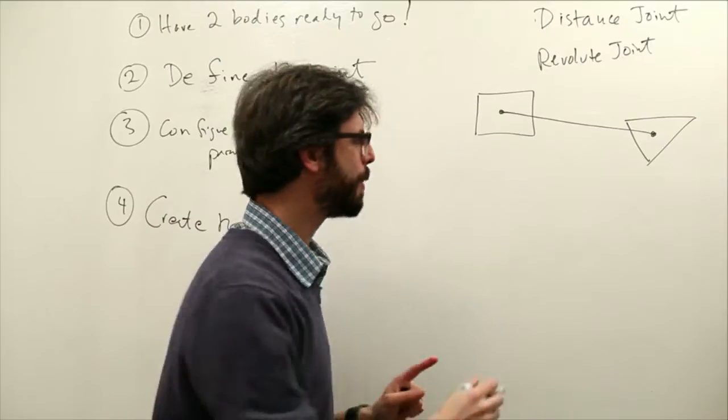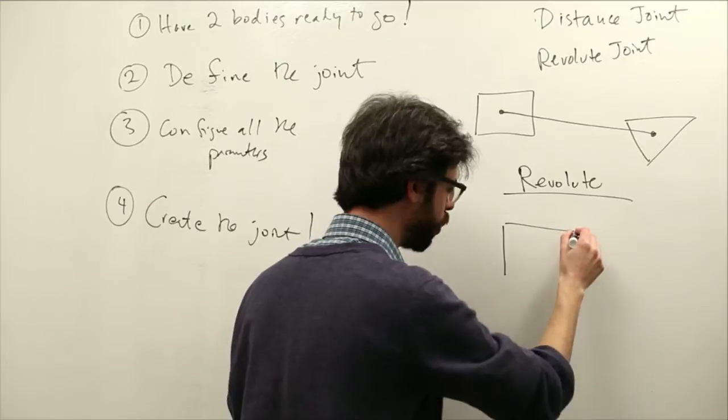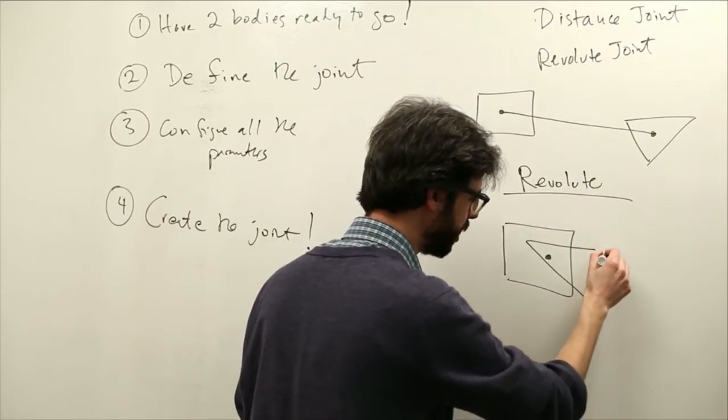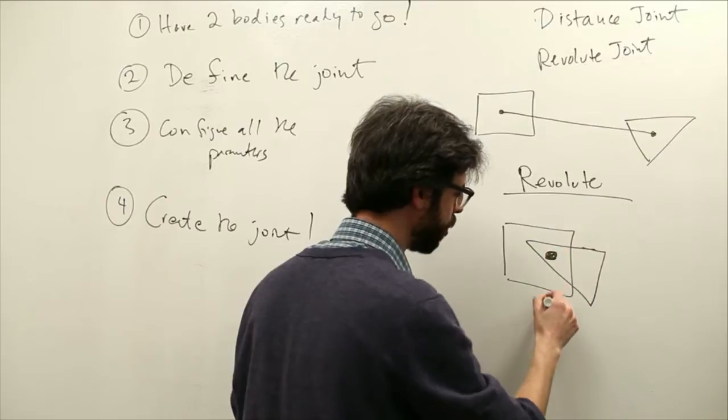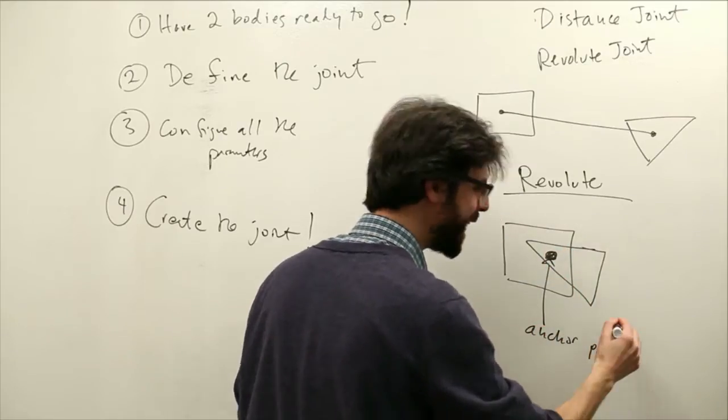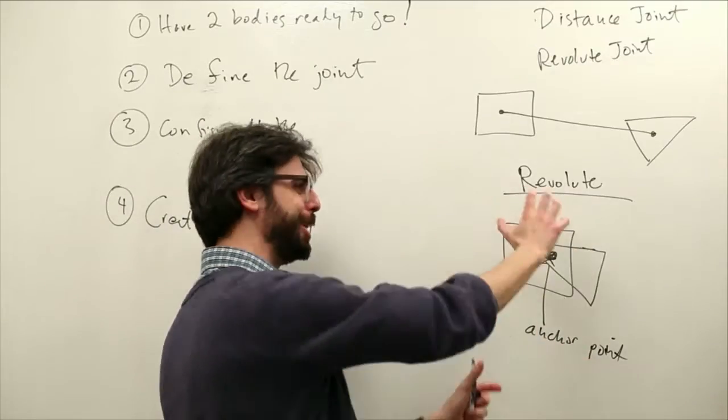One of the things about a revolute joint that is incredibly different is that a revolute joint binds those two bodies at a singular anchor point. What is that anchor point? That anchor point is the point around which those bodies revolve.